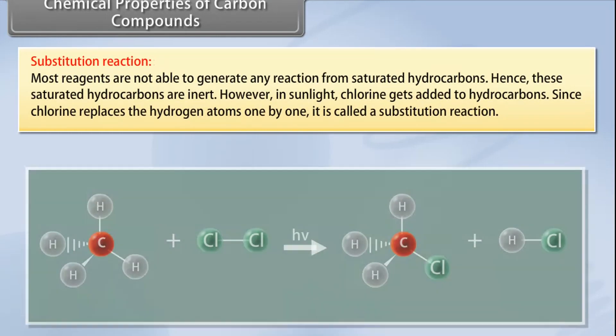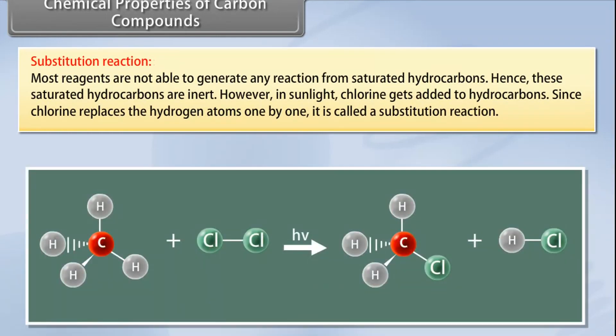Substitution reaction: Most reagents are not able to generate any reaction from saturated hydrocarbons. Hence, these saturated hydrocarbons are inert. However, in sunlight, chlorine gets added to hydrocarbons. Since chlorine replaces the hydrogen atoms one by one, it is called a substitution.